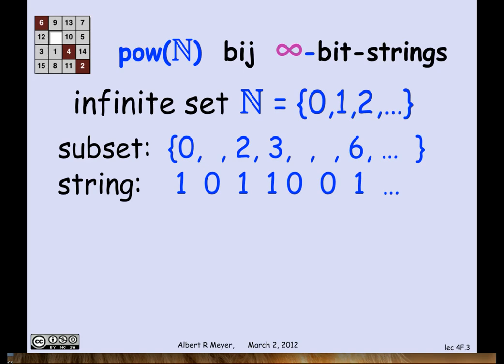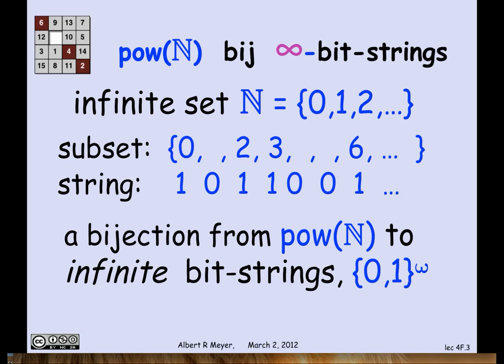Now for exactly the same reasoning as before, this correspondence between infinite bit strings and subsets of the non-negative integers is in fact a bijection. And so what we can conclude is that those two sets are the same size informally.